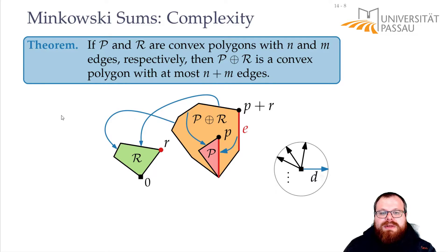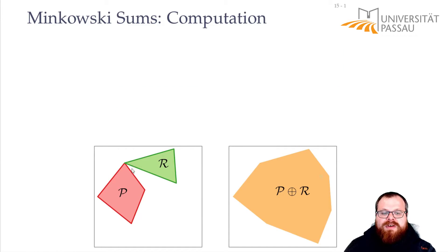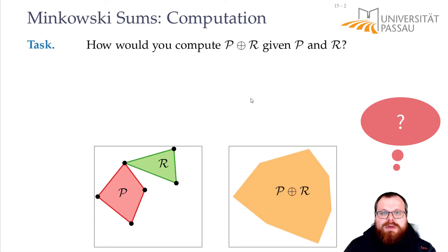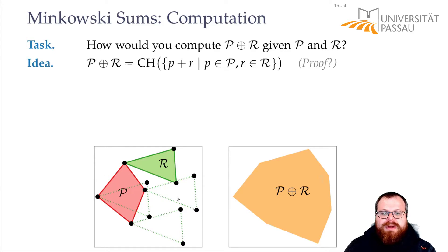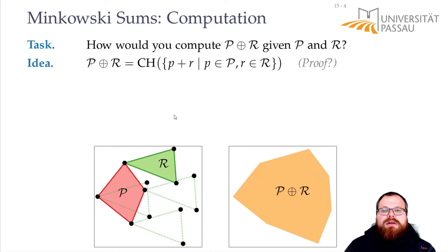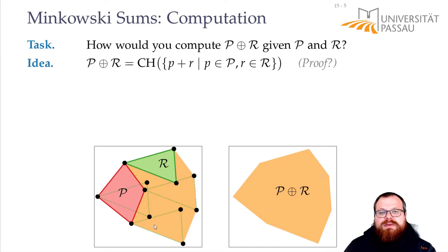So the complexity is fine. But how do we compute the Minkowski sum of two polygons? If we have two convex polygons, how would you compute the Minkowski sum? One idea is as follows: we take all the corners of the polygons and we compute their vector sum. That gives us a bunch of points in the plane — here in particular all the black ones. And then we compute the convex hull of these points. This gives us exactly the Minkowski sum. Why is this true? Well, for example, if we look at the topmost point of the Minkowski sum, we get it from the vector sum of the topmost points of the two polygons.